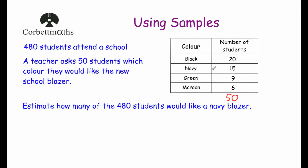Let's look at our navy blazer. 15 students would like a navy blazer, so that's 15 out of 50. Let's write that as a fraction: 15 fiftieths. If we cancel that down, 15 and 50 can both be divided by 5. 15 divided by 5 is 3, and 50 divided by 5 is 10. So three-tenths of our sample would like a navy blazer.